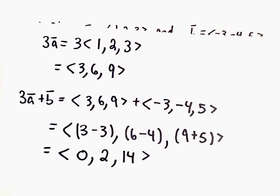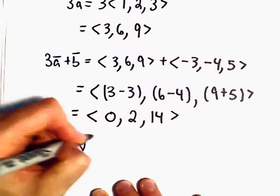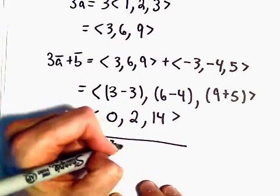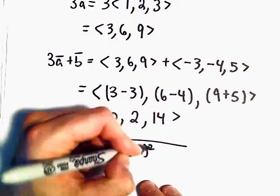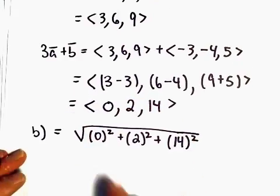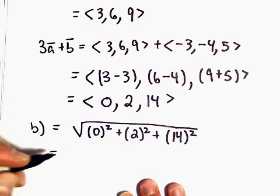Let's also go ahead and do the other part where we actually find the length of the vector. So again, to find the length of the vector, all we do is we take each component, we square it, and then we add all of those together. So we'll take 0 squared plus 2 squared plus 14 squared, and that's what we have to simplify.